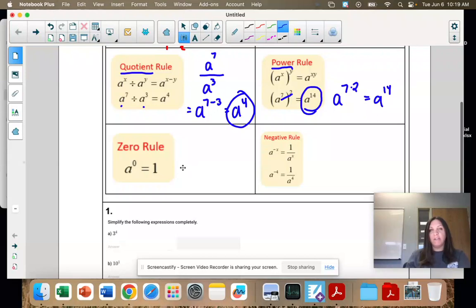The next one's just a general one. You need to remember the zero rule. Anything to the power of 0 is always 1. So if I have 100 to the power of 0, it's 1. If I have 5 to the power of 0, it's 1. Anything to the power of 0 is 1.